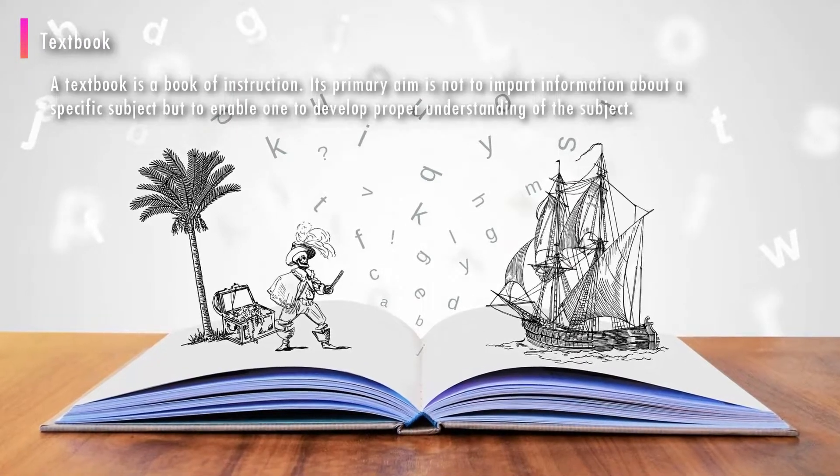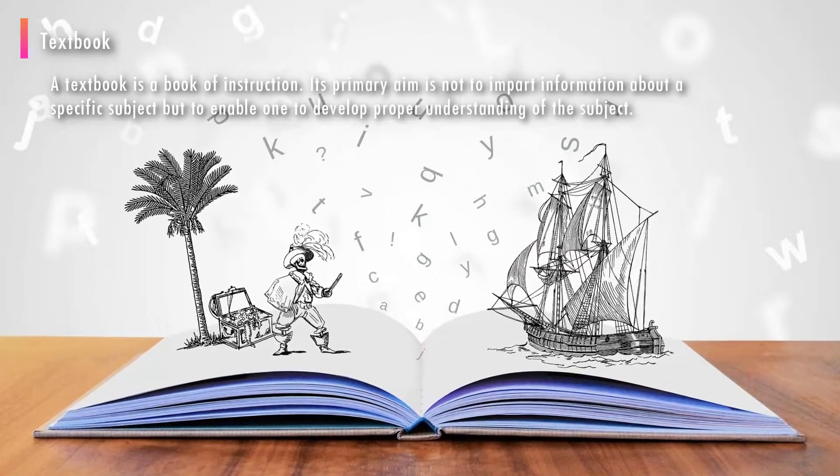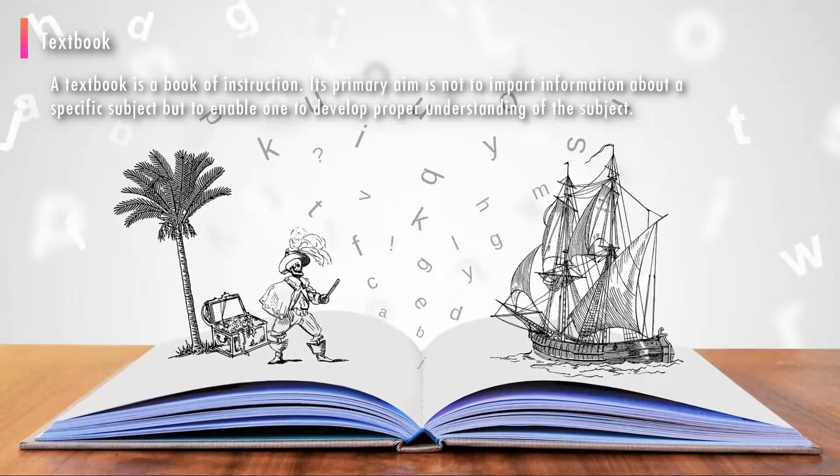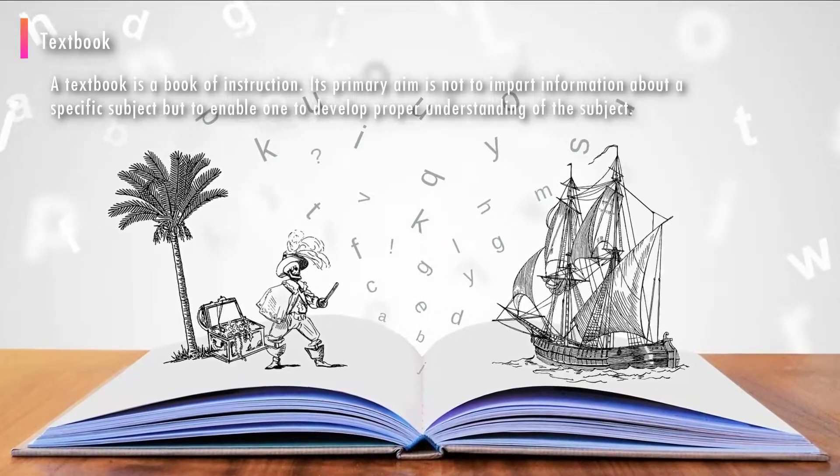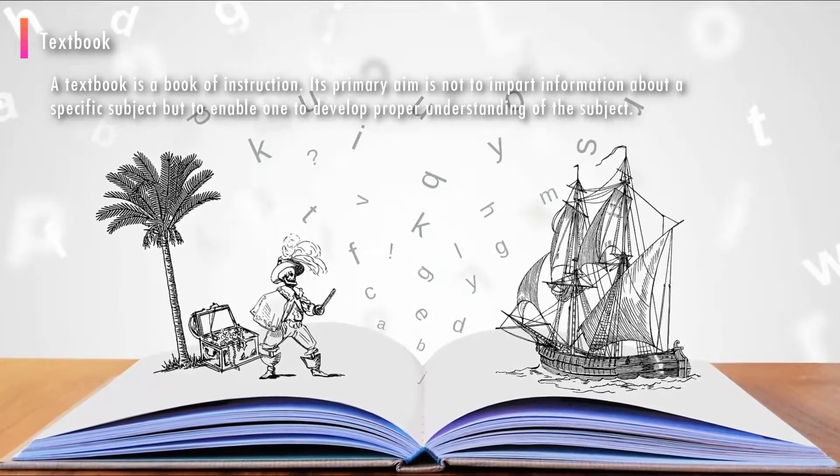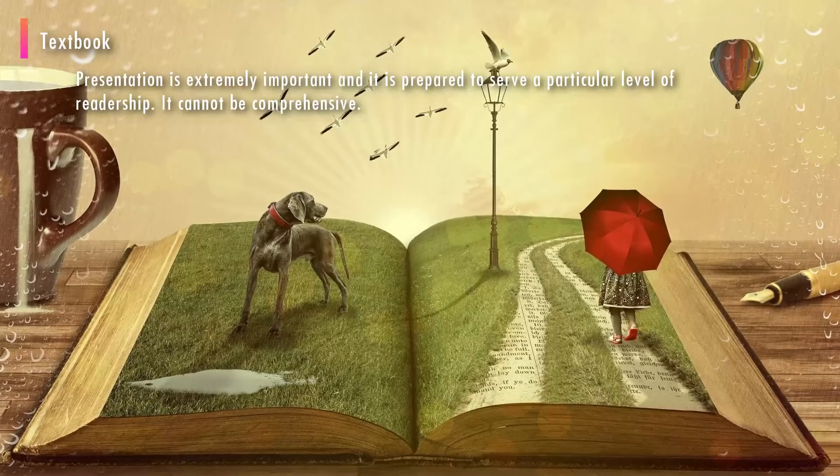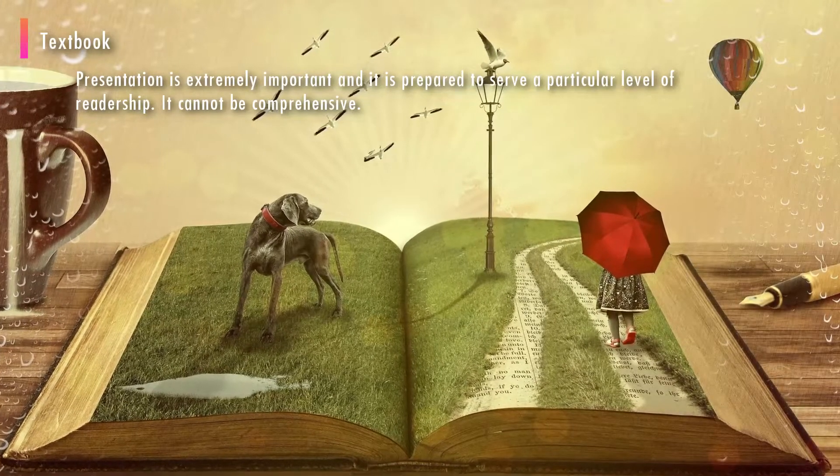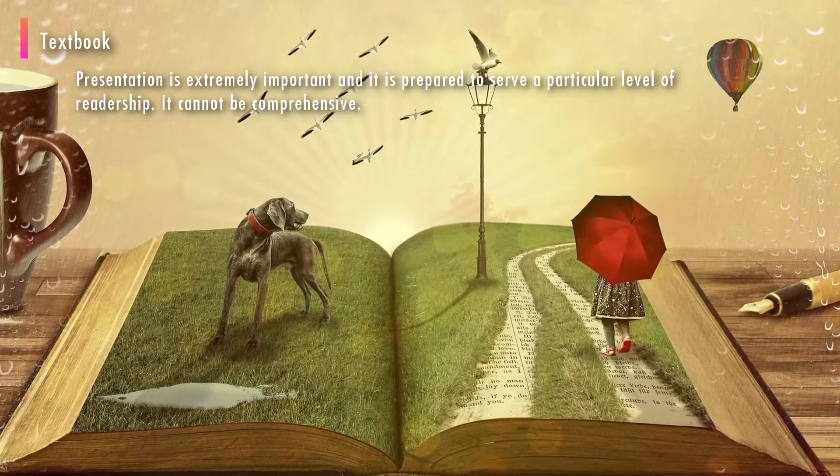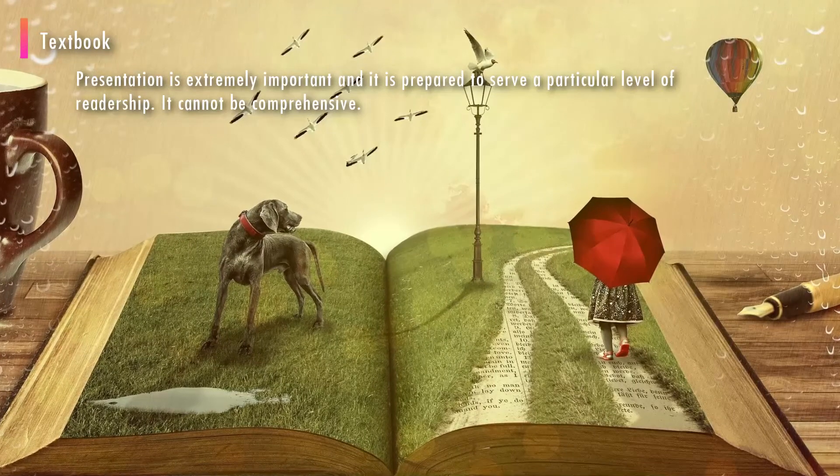A textbook is a book of instruction. Its primary aim is not to impart information about a specific subject but to enable one to develop proper understanding of the subject. Presentation is extremely important and it is prepared to serve a particular level of readership. It cannot be comprehensive.